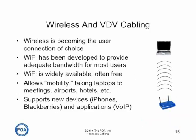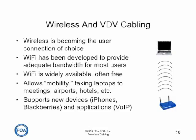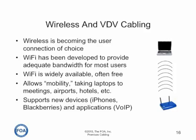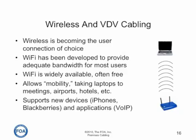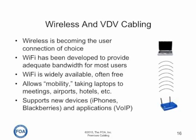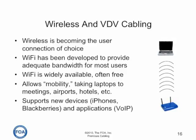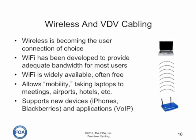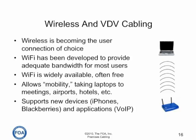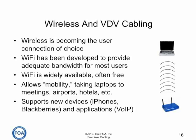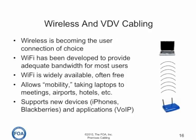With the proliferation of laptops, tablet computers, and smartphones, wireless is becoming the user connection of choice. All generally can connect over WiFi, which has been developed to provide adequate bandwidth for most users — we're talking about 100 megabits per second. It's widely available, it's often free, and what it allows is mobility. You can take your laptop, your tablet, your smartphone to meetings, airports, hotels, and the like. What's actually happening is that wireless is replacing the copper connection to the desktop for most users.